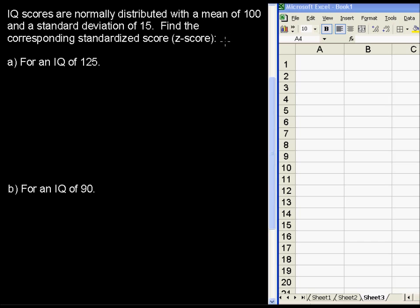IQ scores are normally distributed with a mean of 100 and a standard deviation of 15. Find the corresponding standardized score, or the z-score, for an IQ of 125 and then for an IQ of 90.